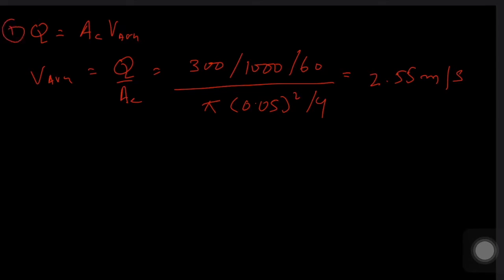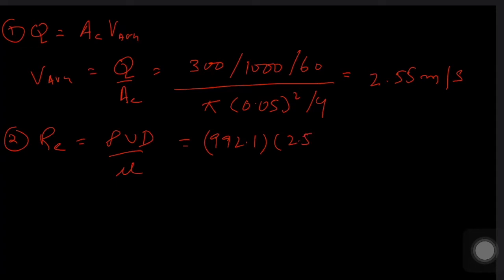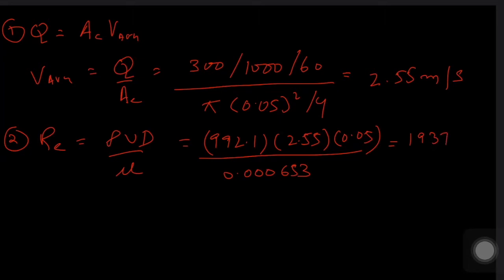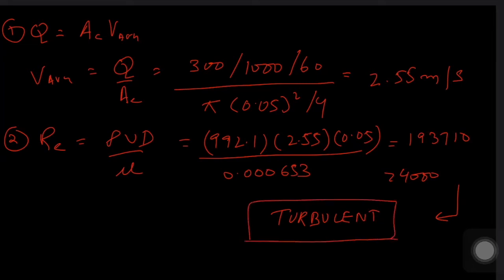Now that we have the velocity, let's calculate the Reynolds number: Re = ρVD/μ = 992.1 × 2.55 × 0.05 / 0.000653, which gives Re = 193,710. This is greater than 4000, so this flow is definitely turbulent.